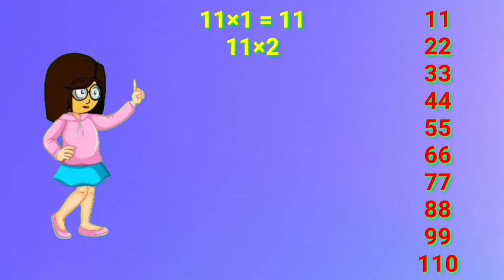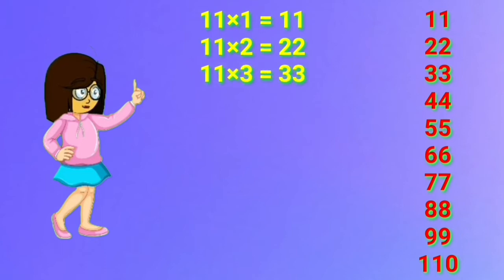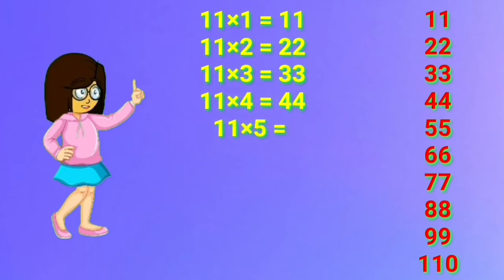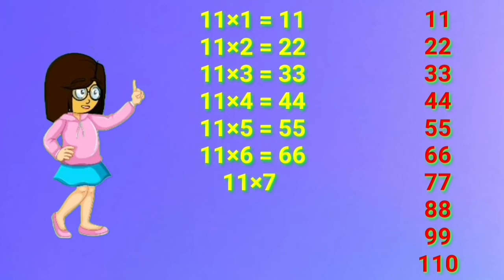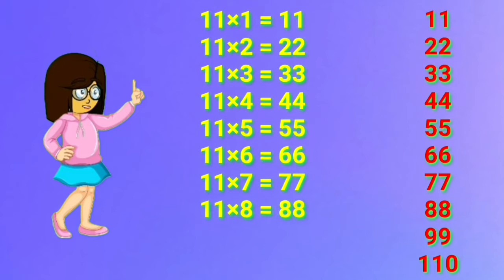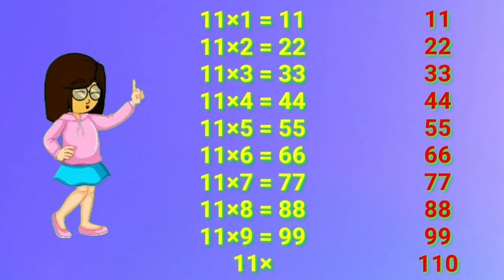11 one's are 11. 11 two's are 22. 11 three's are 33. 11 four's are 44. 11 five's are 55. 11 six's are 66. 11 seven's are 77. 11 eight's are 88. 11 nine's are 99. 11 ten's are 110.